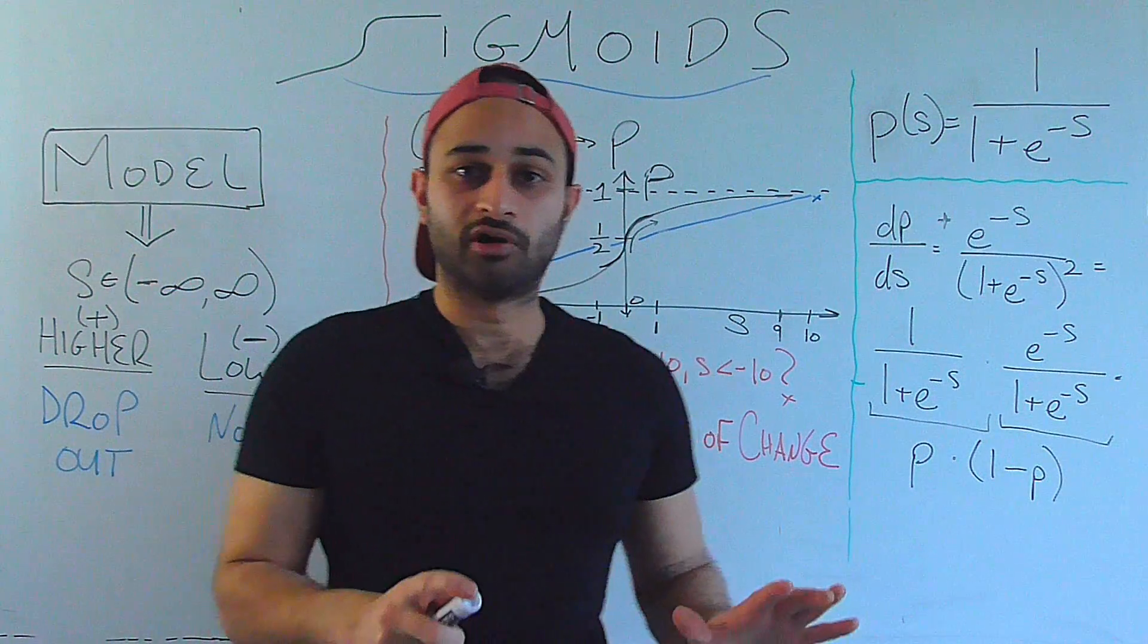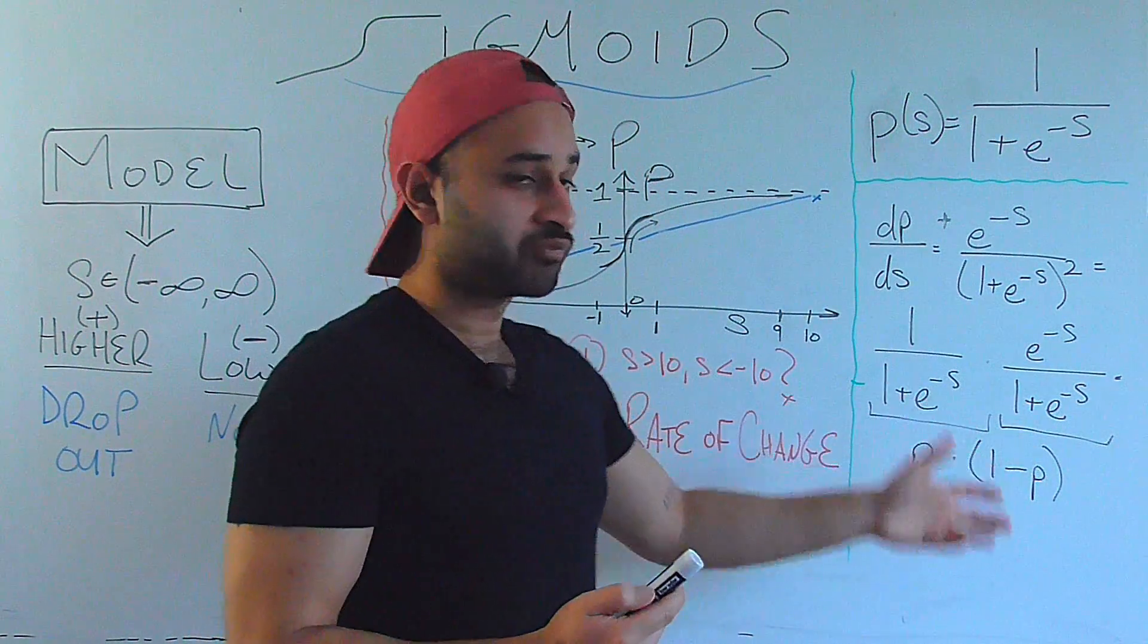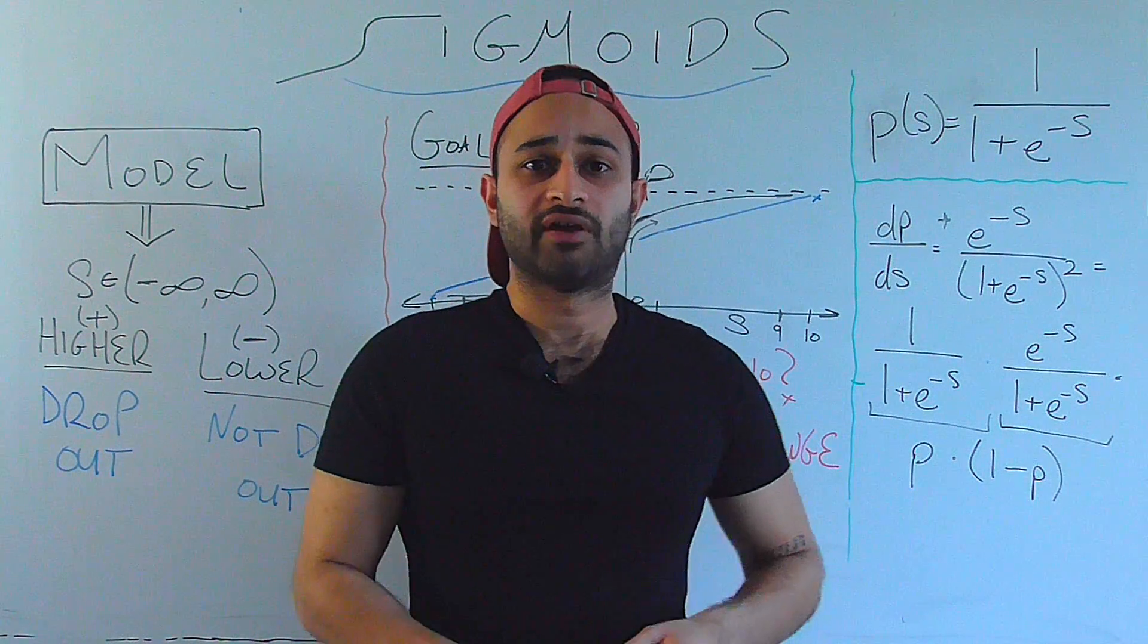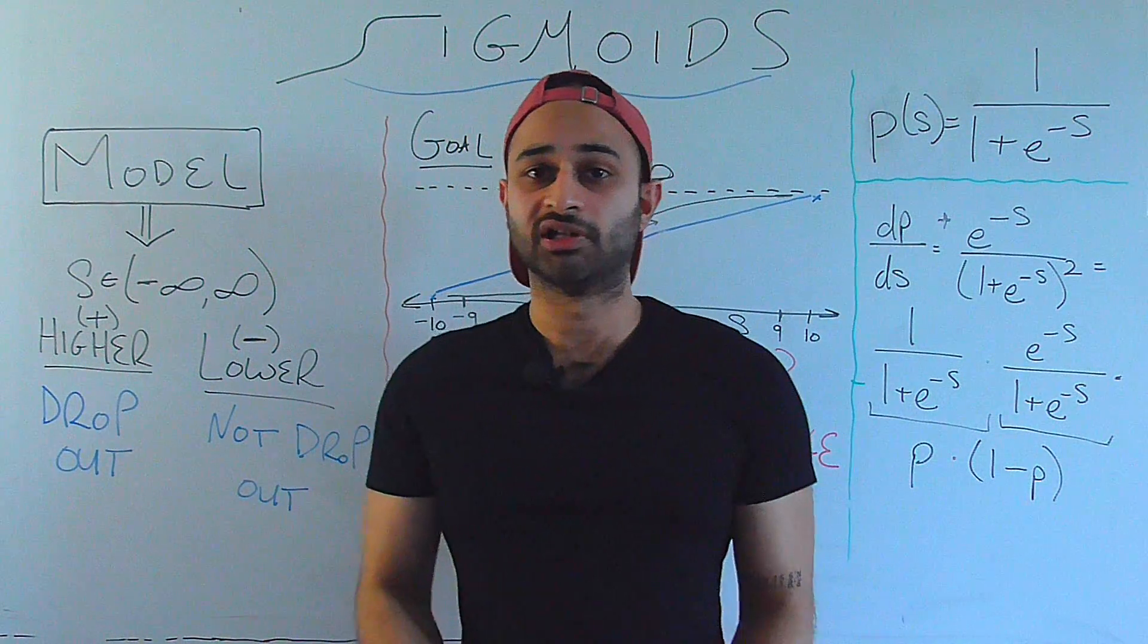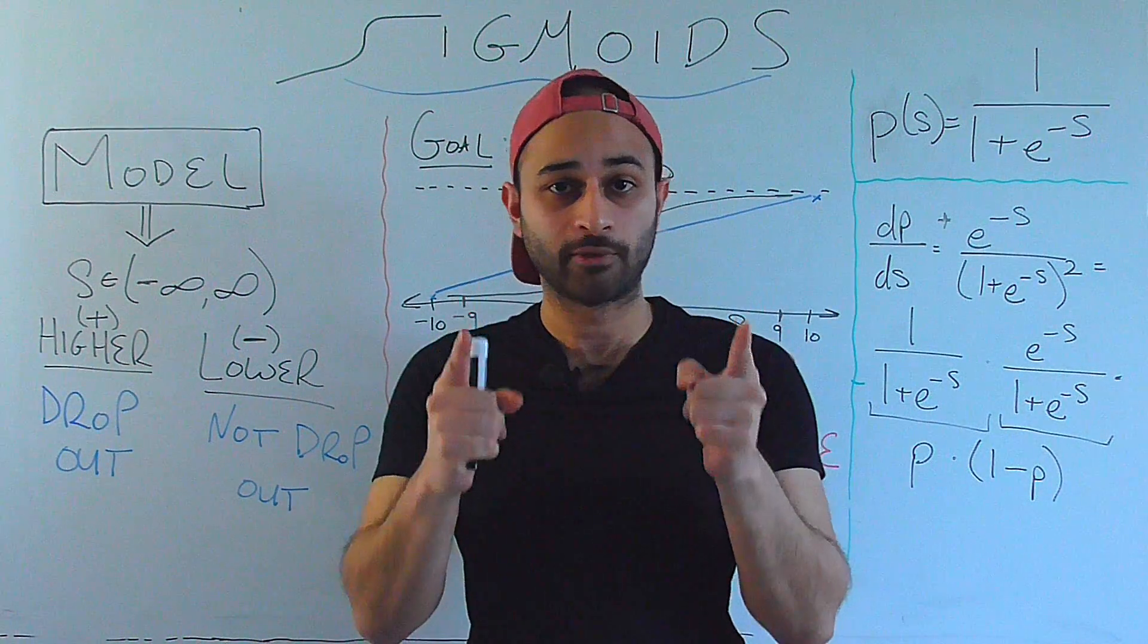So hopefully that helps you understand the sigmoid very deeply, not just at a surface numerical level, but at a level of why do people choose to use it? Why is it used so much in machine learning? And if you have any questions at all, please feel free to leave them in the comments below. Like and subscribe for more videos just like this. And I will see you guys next time.